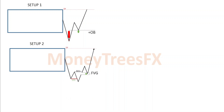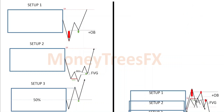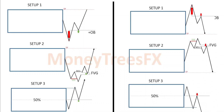The second setup is the actual break of the box and waiting for the market structure shift, then using the fair value gap for your entry. The last one is the easiest to see — the break above the box and waiting for price to come back to the 50% level of the box. For sell setups, it's just a mirror of everything. Let's look at a couple of practical examples.